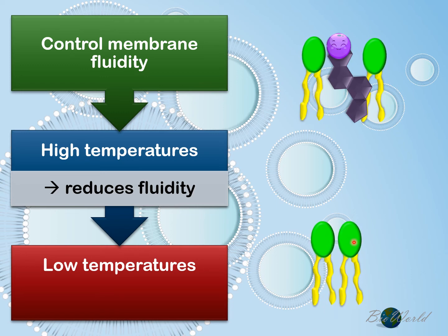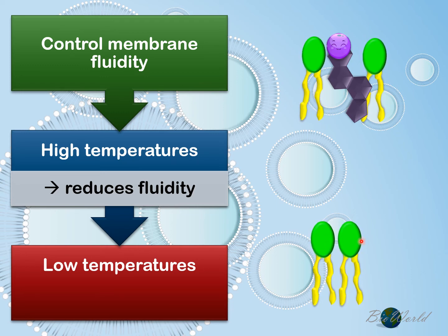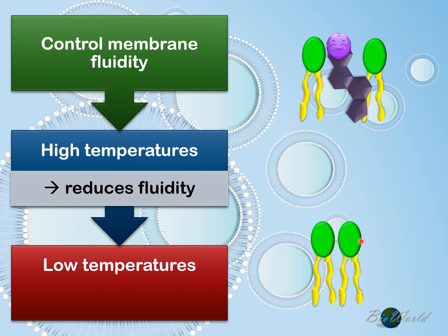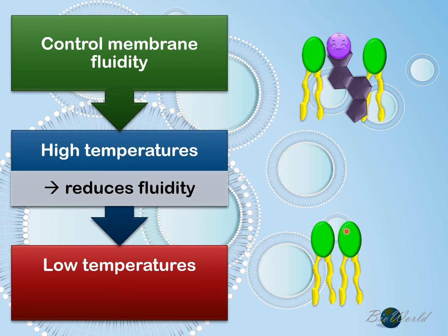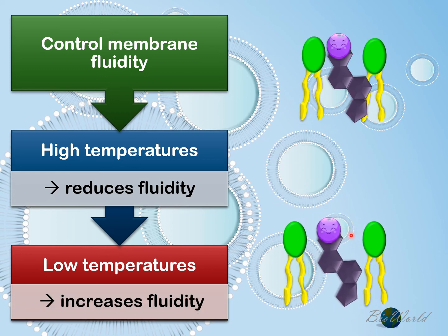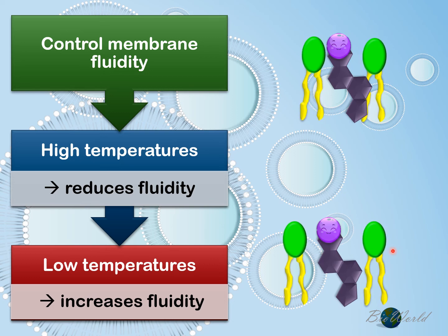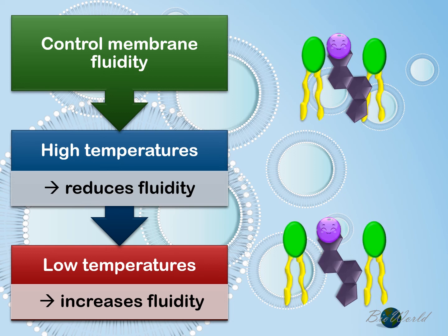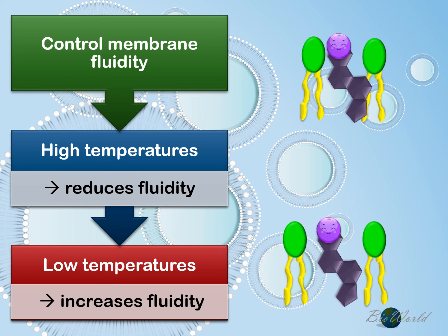Here, where the membrane's fluidity has decreased, the membrane is now considered rigid. What the cholesterol will do is squeeze itself in between the two phospholipids, pushing them further apart. So in this way, it can increase the fluidity to return to normal.